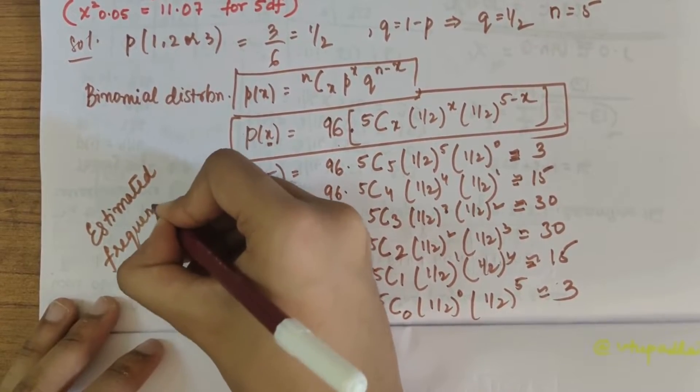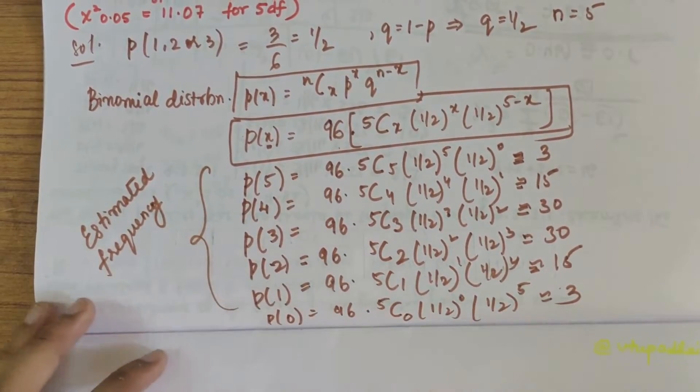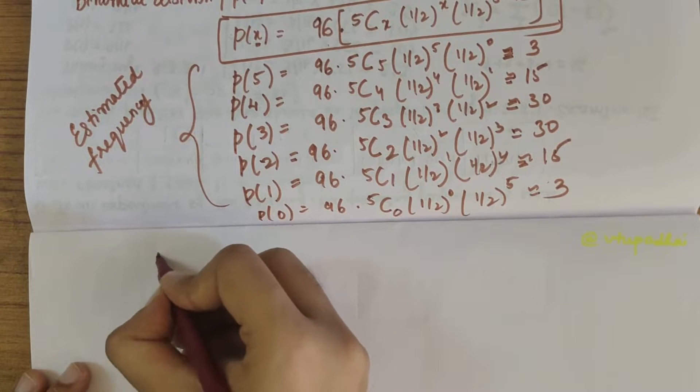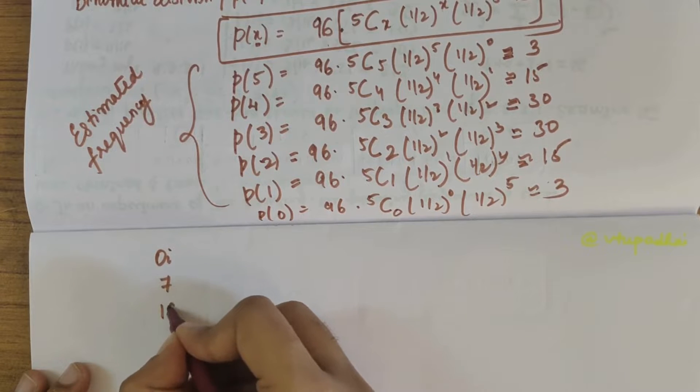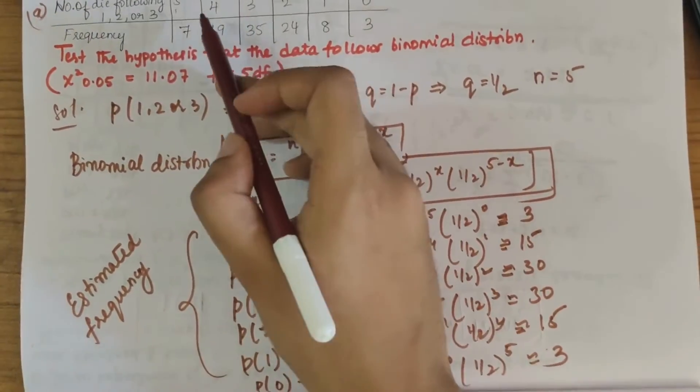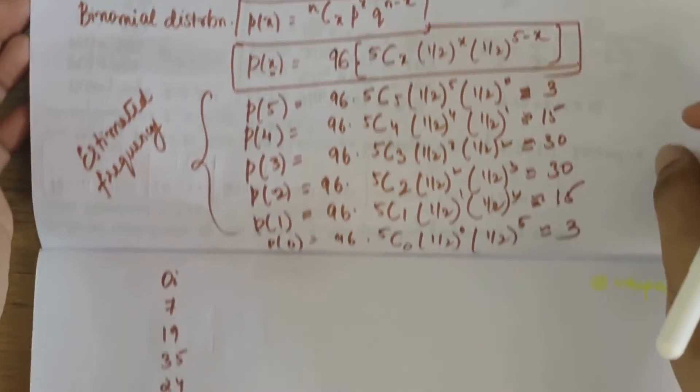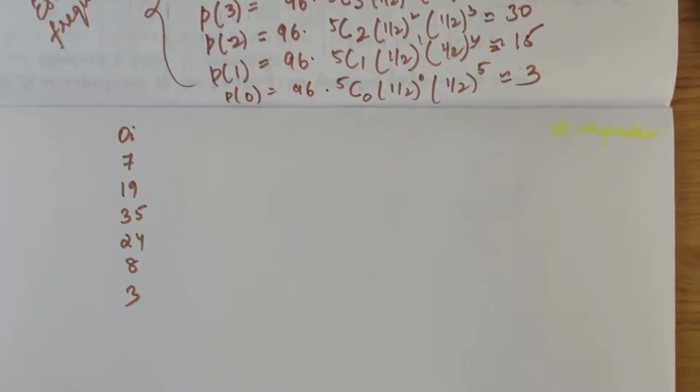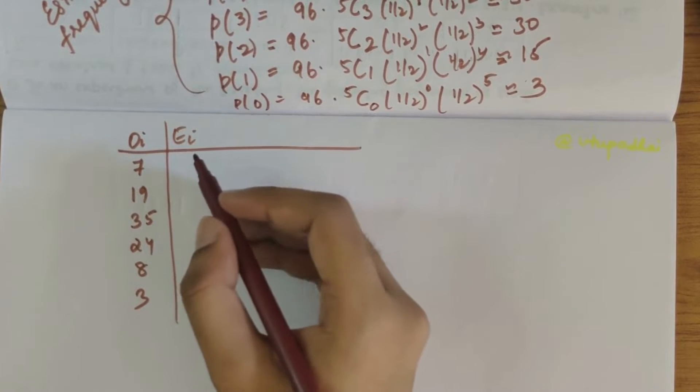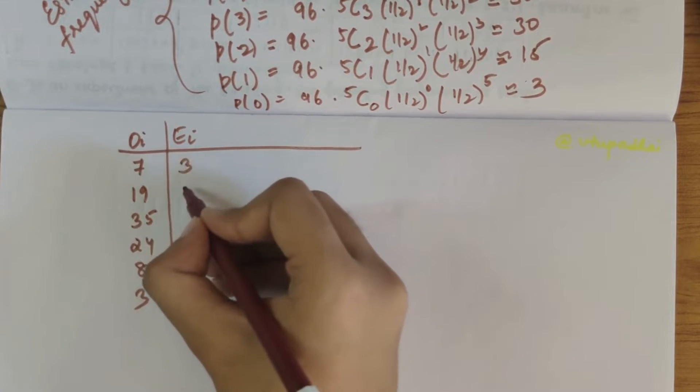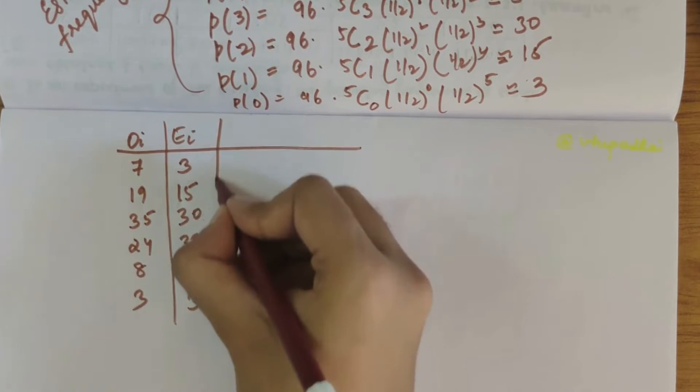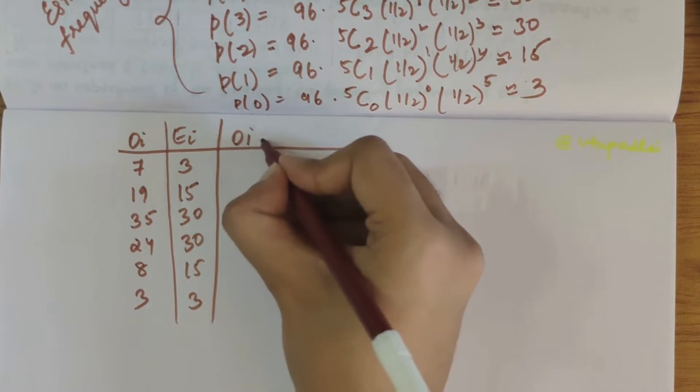Now formulating a table with the data which we have obtained. We can write the observed frequencies as 7, 19, 35, 24, 8, and 3 from the given question. Next we have the estimated frequencies that we have obtained: Ei values are 3, 15, 30, 30, 15, and 3. Next we have Oi minus Ei, then we have Oi minus Ei whole square divided by Ei.